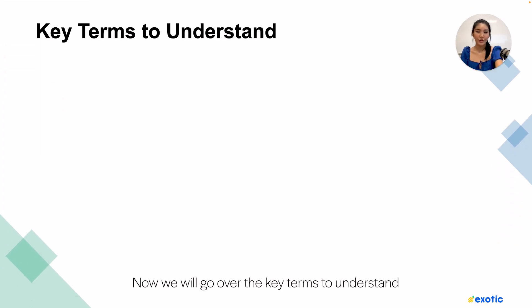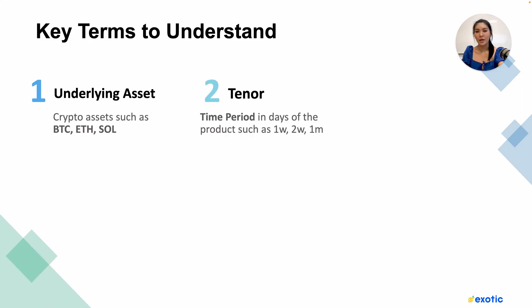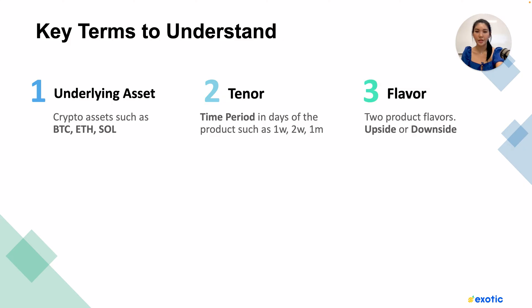Now we will go over the key terms to understand. The underlying asset refers to crypto assets such as Bitcoin, Ethereum, or Solana. Tenor is the time period in days of the product, such as one week, two weeks, or one month.